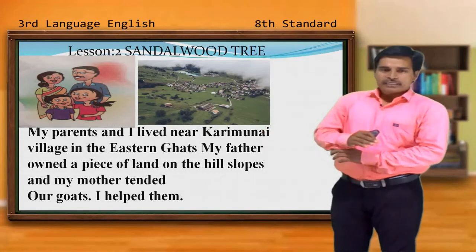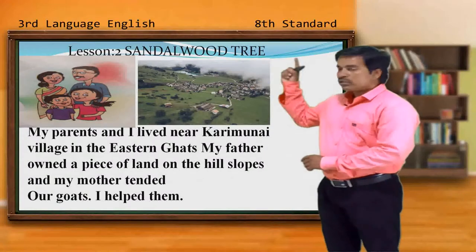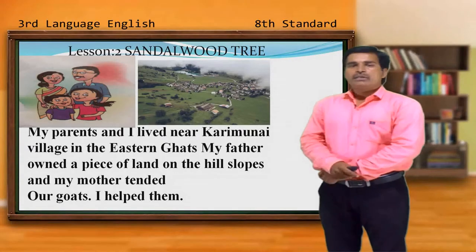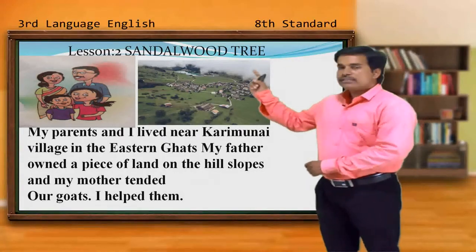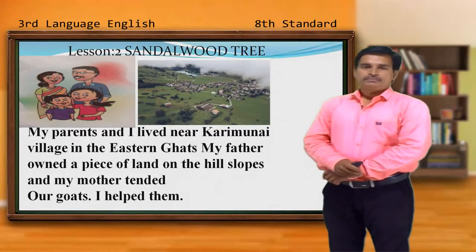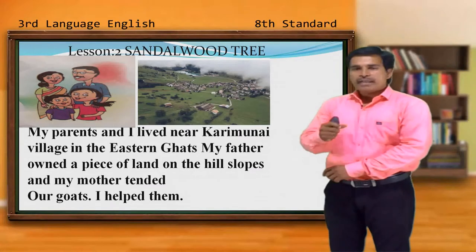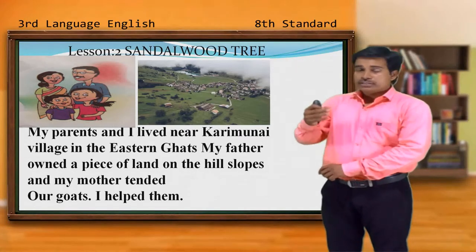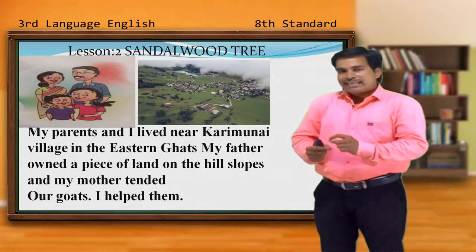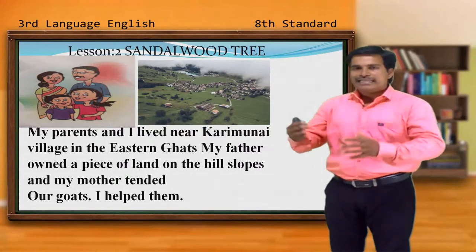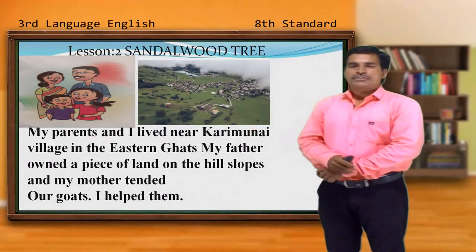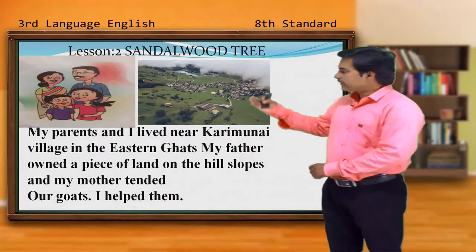Now come back to page number 8. Lesson number 2, Sandalwood Trees. Let us begin the first paragraph. This particular lesson is a wonderful story about a girl by name Sunanda. She was a brave girl. Because of one particular incident she lost her eyesight, yet she stood against the cutting down of trees. As we go through the lesson, we will come to know about it.